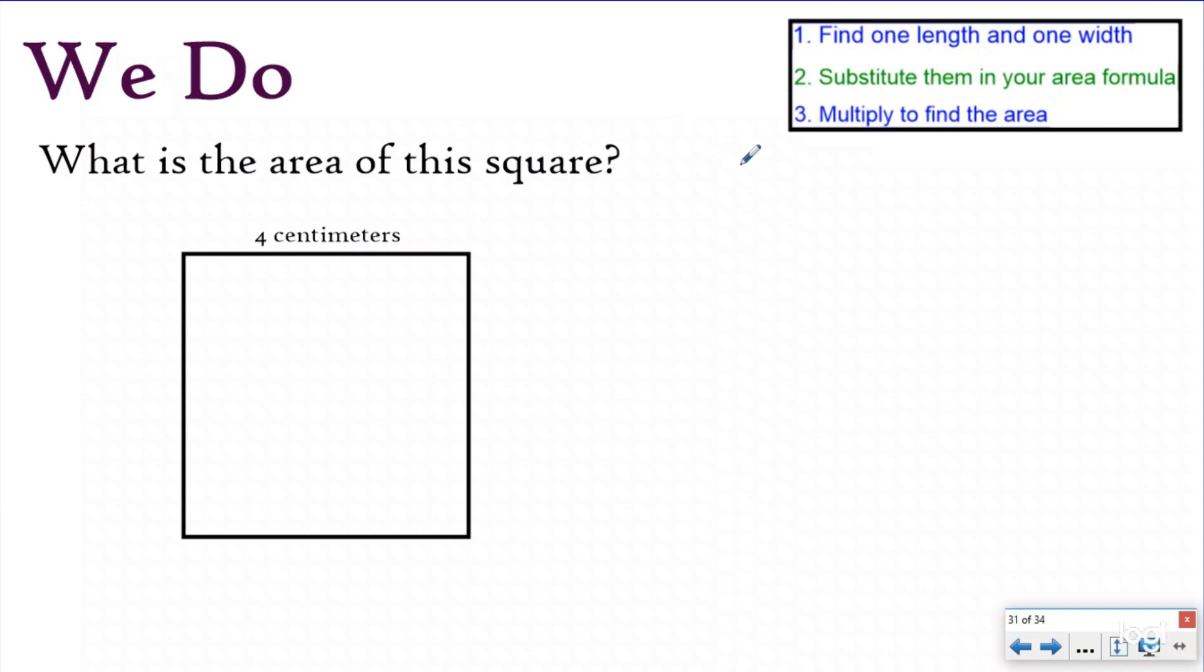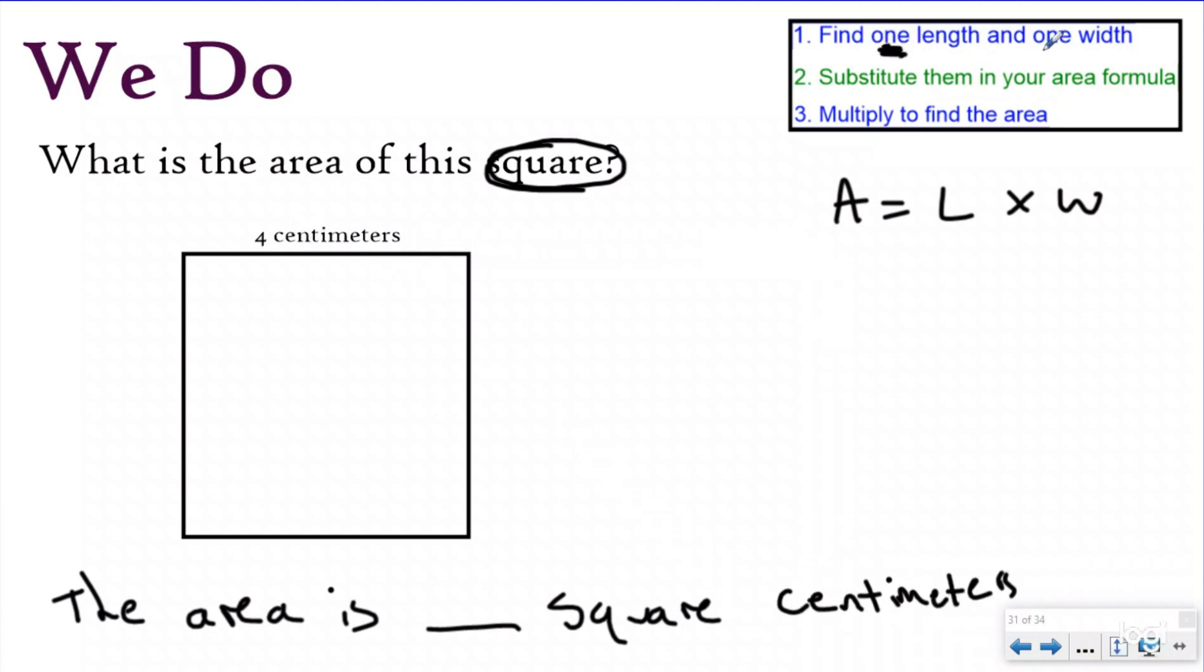Let's take a look at a we do problem. And again, I'm going to use my area formula to help me solve this because we're doing area today. And the question says, what is the area of this square? Now, this square is going to be very important. In a second, let me write my statement. The area is blank square. And I see that my units here are going to be centimeters. So I'm going to say square centimeters. Step number one is find one length and one width. But they've only given me one of my dimensions. Right. And I need to I need length and width.